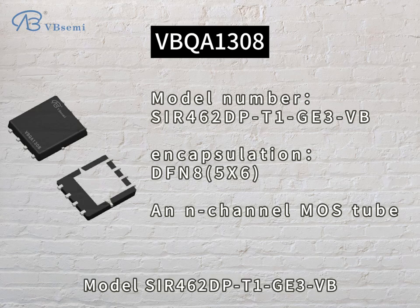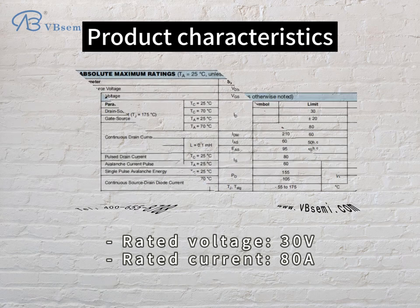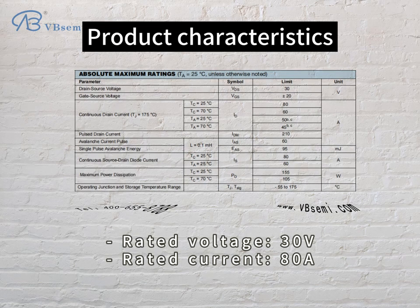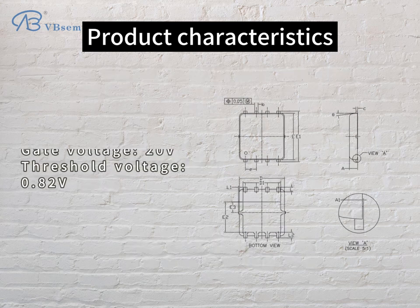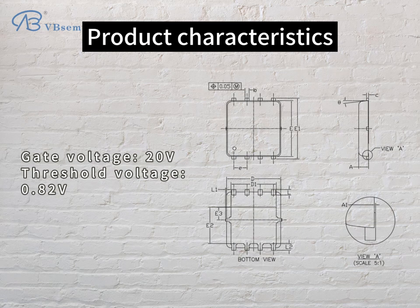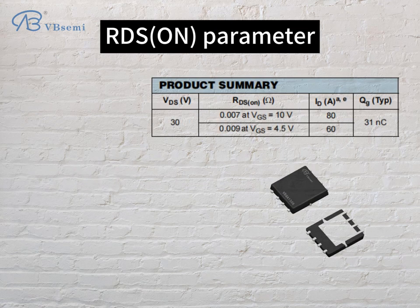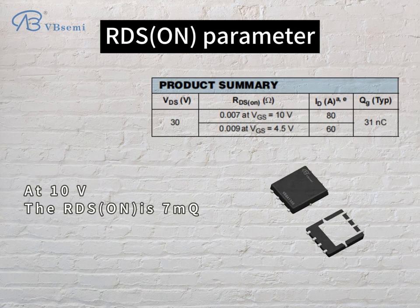Model 446R DPT-EGE-3VB product characteristics: Rated Voltage 30V, Rated Current 80A, Gate Voltage 20V, Threshold Voltage 0.82V. For the RDS(on) parameter, at 10V the RDS(on) is 7mΩ.